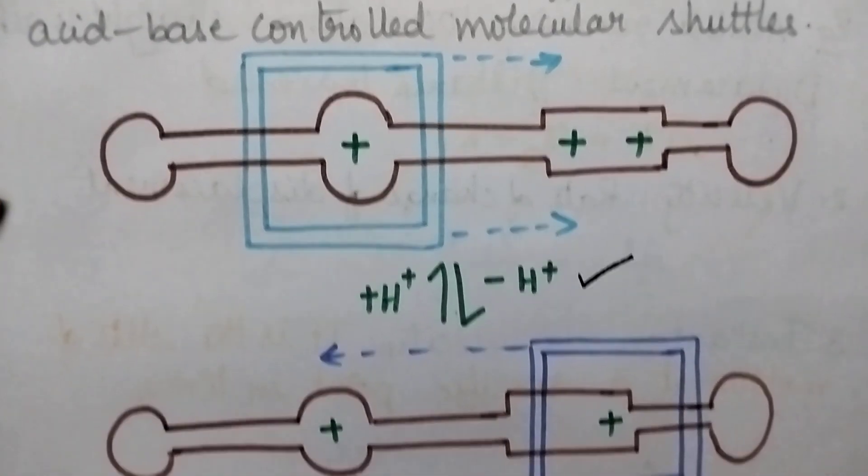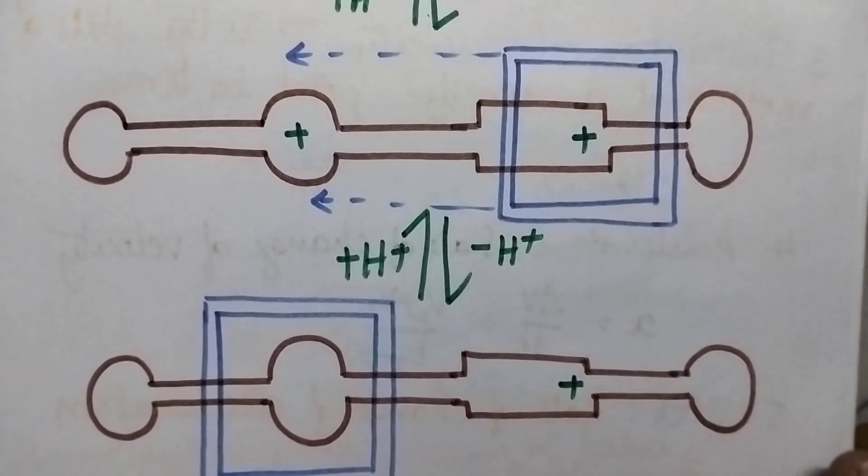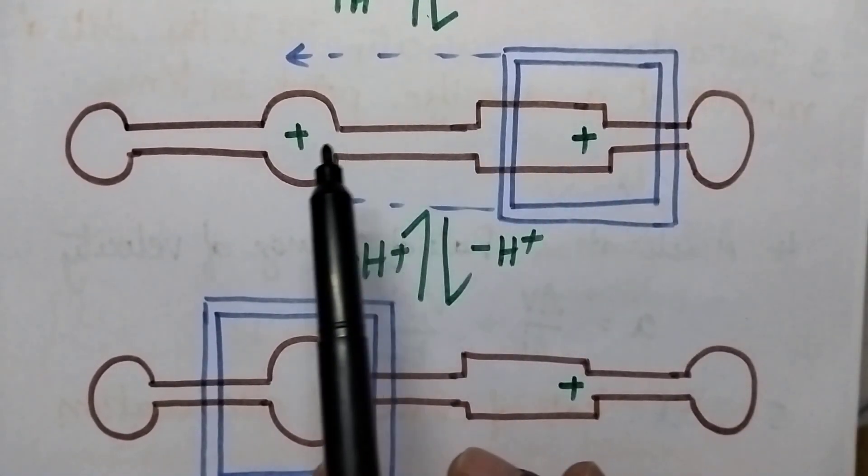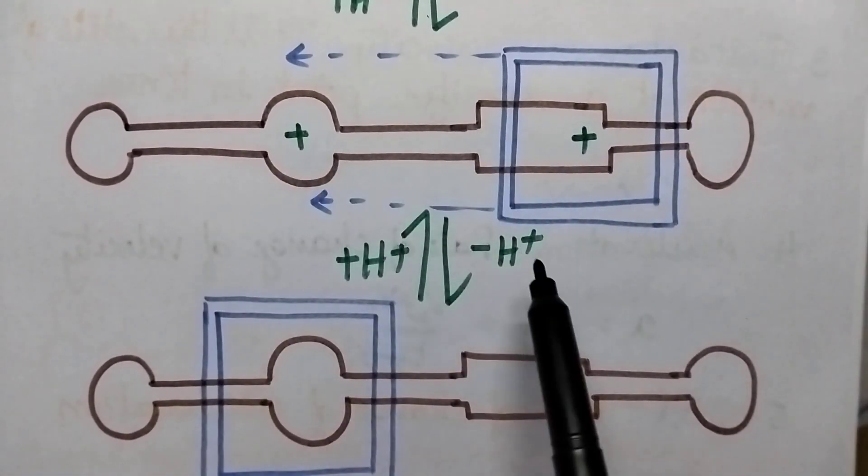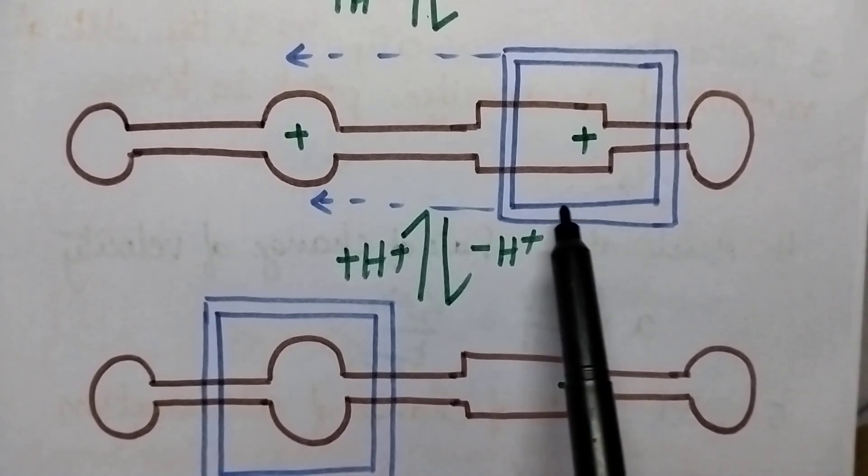In the second step, the macro cycle can be moved back to the original position through reprotonation.